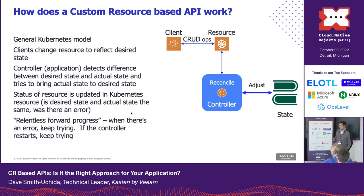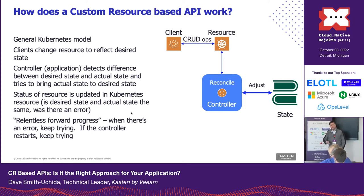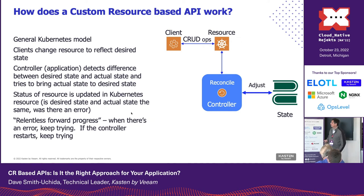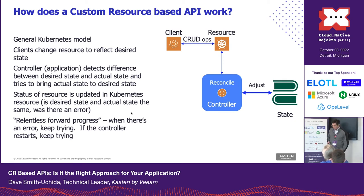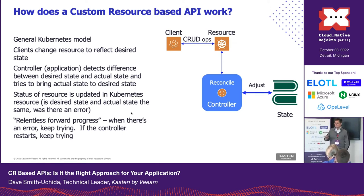How does an application like this work? This is pretty much the standard Kubernetes model. Your client changes the resource to reflect what they want — that's your desired state. And then the controller, your application, is going to look at what's out there in the Kubernetes resources, look at the state of the world, and try to bring the two into sync. That's the basic idea — this reconciliation. Then it'll update the resources with the status of the real world. And of course there's relentless forward progress, which means your controller should keep retrying things. If it hits an error, it should retry periodically until it eventually gets there.